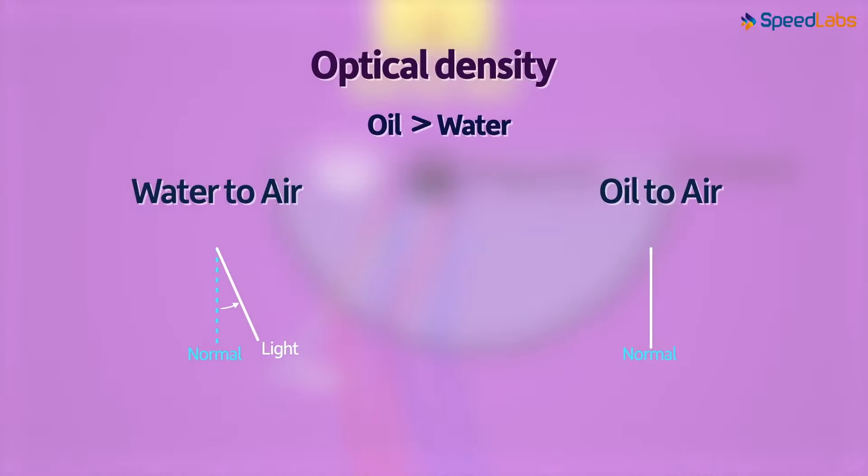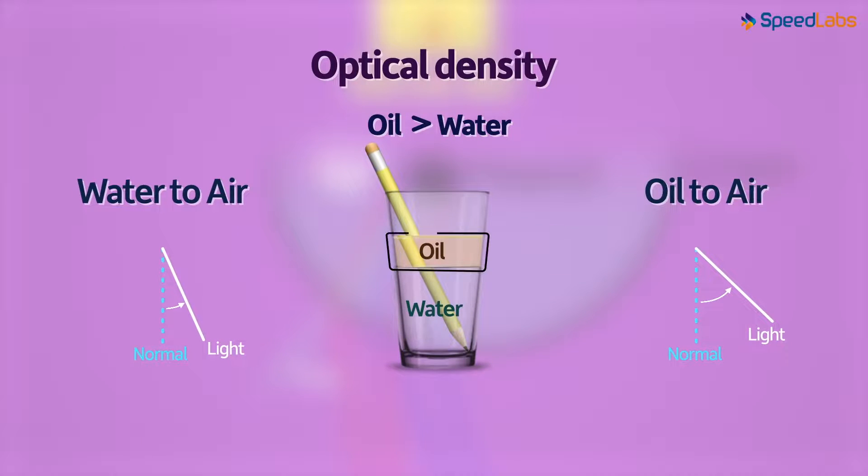And here's the interesting part. Since oil is more optically denser than water, light bends further away from the normal in this case. Or we can also say that air is more optically rarer than oil than it is to water. And this is the reason why the portion of the pencil inside the oil appears further apart from the actual position than the portion inside the water.